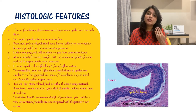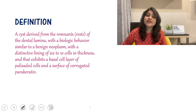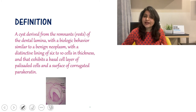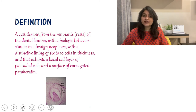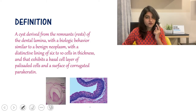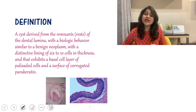Now the definition of OKC: it is a cyst derived from remnants of the dental lamina, with a biological behavior similar to a benign neoplasm, with a distinctive lining of six to ten cells in thickness that exhibits a basal cell layer of palisaded cells and a surface of corrugated parakeratin. Now that the topic is covered, the definition is easy to understand — that is why it was left for last.